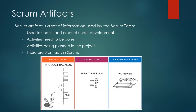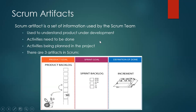The last topic is Scrum Artifacts. Artifacts are objects — sets of information in Scrum. We discussed the Sprint backlog, the product backlog, and the increment — all these together comprise the Scrum artifacts. The product backlog is a set of information, the Sprint backlog is a set of information, and the increment is a set of information. These help us understand what we are working on, what we are going to work on, and what we are going to release to the customer.